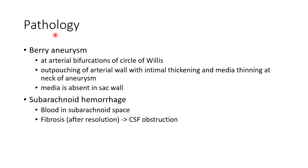Now let us see about the pathology in brain aneurysm and subarachnoid hemorrhage. Aneurysms occur at arterial bifurcations of the circle of Willis as described earlier. They are seen as outpouching of the arterial wall with intimal thickening and media thinning at the neck of the aneurysm. The media is absent in the sac wall of the aneurysm. Regarding subarachnoid hemorrhage, there will be blood in the subarachnoid space. After resolution, there can be fibrosis leading to CSF obstruction.